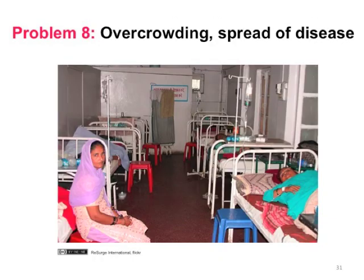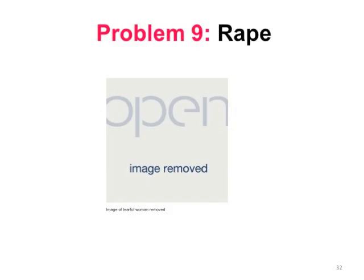Nine: rape and sexual and gender-based violence. Ten: failure to build or occupy emergency shelters.